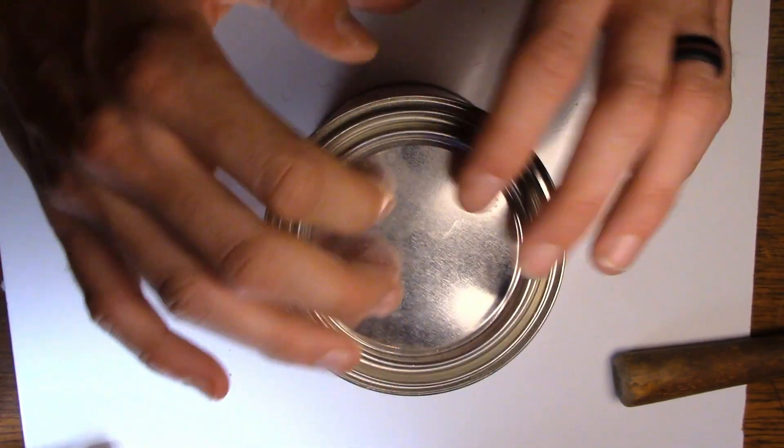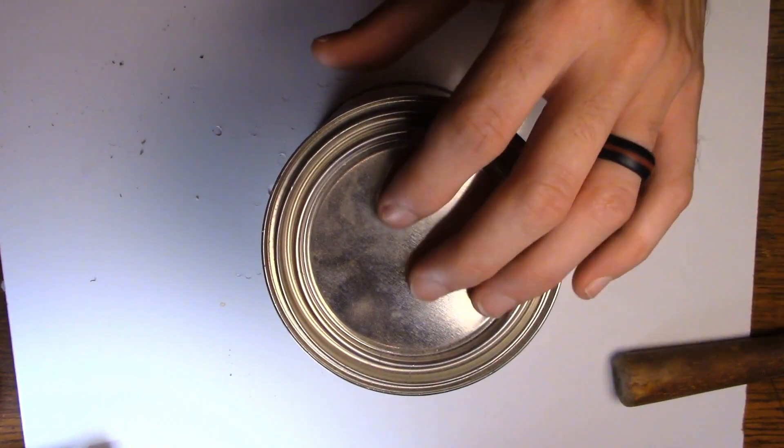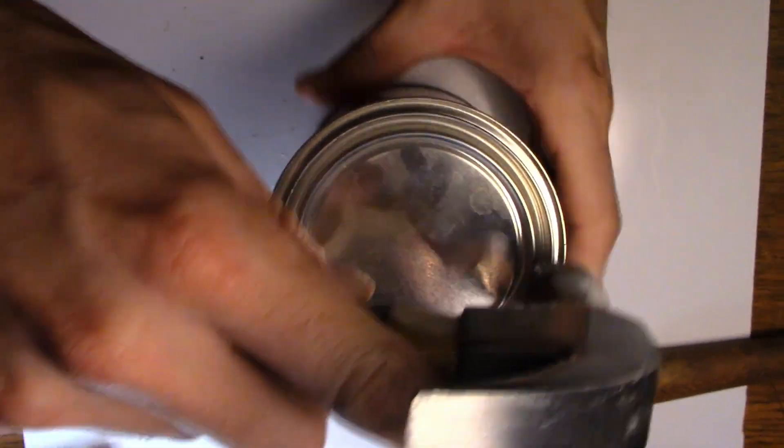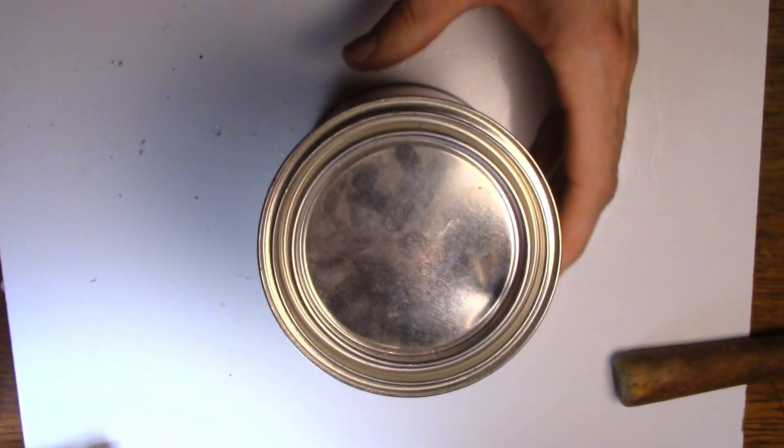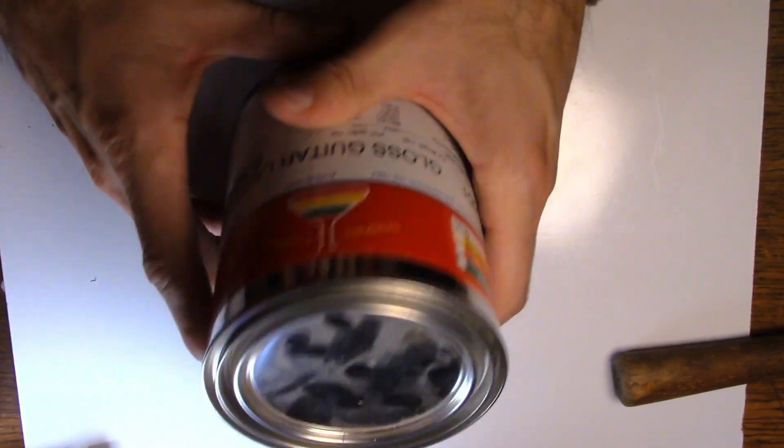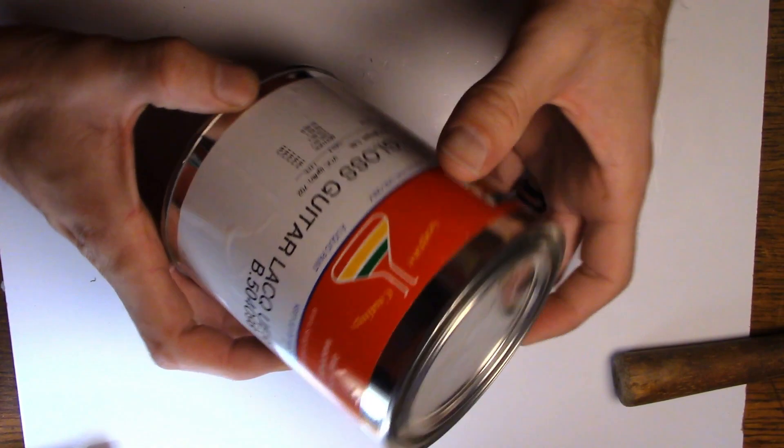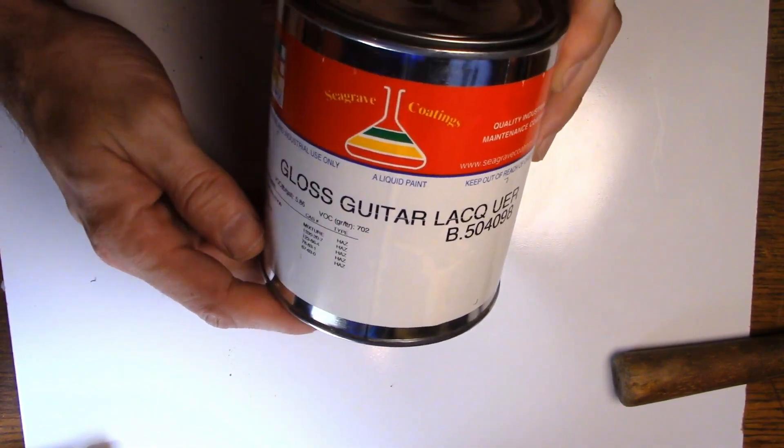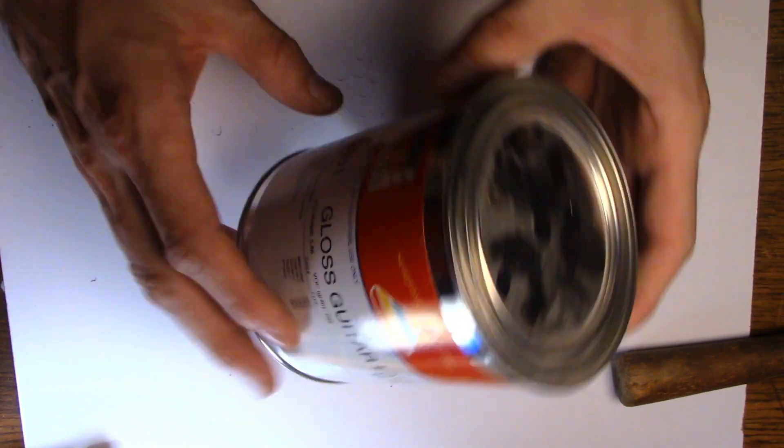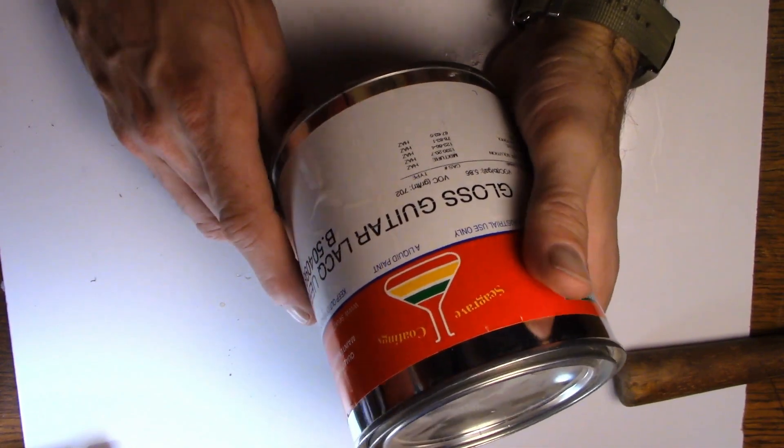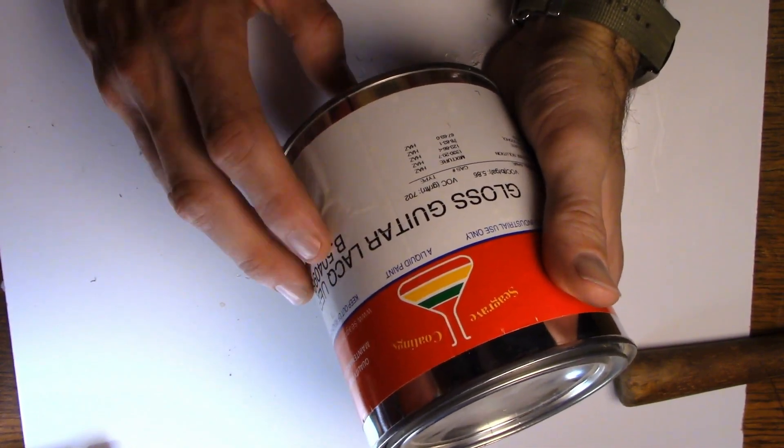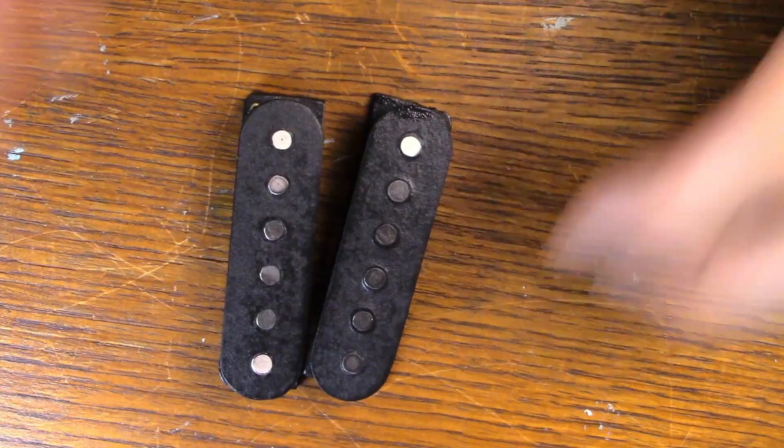Okay so I got those guys drying. Now what I'm going to do is show you what I'm using here. It's the same stuff I used in my other videos. If there's anything that I'm doing here that you're wanting to know how to do, I covered just about every bit of this in my other video on building a pickup. But it's gloss guitar lacquer, Seagraves coatings. I got it from Stu Mac.